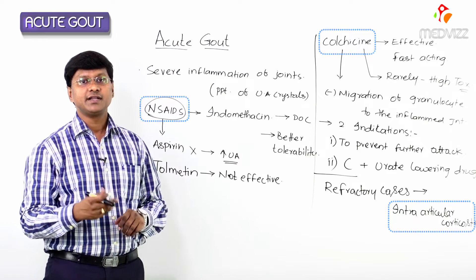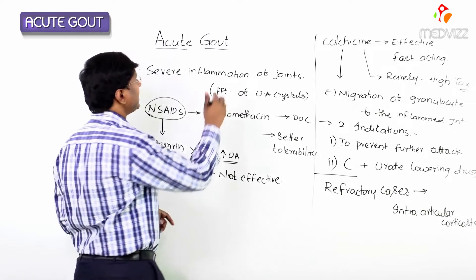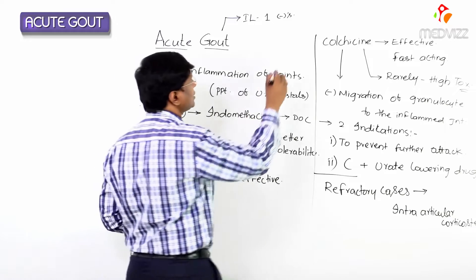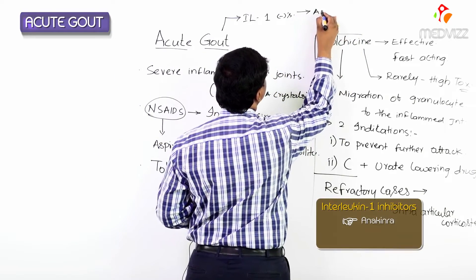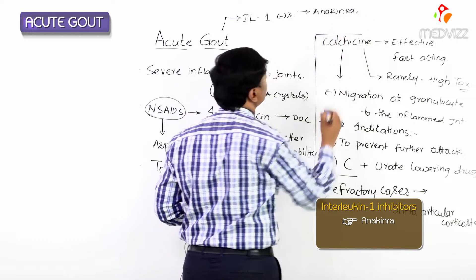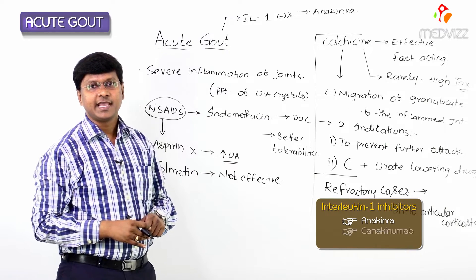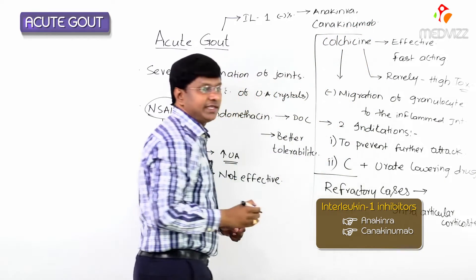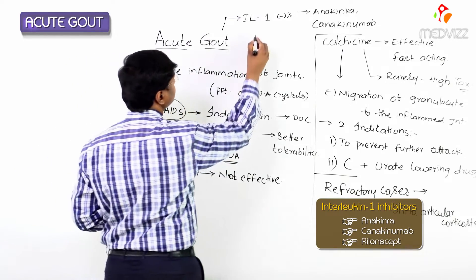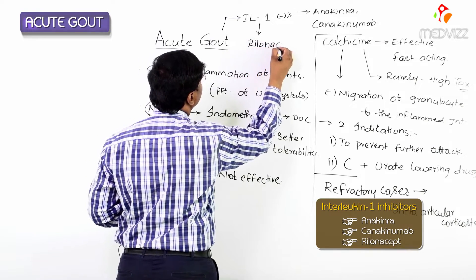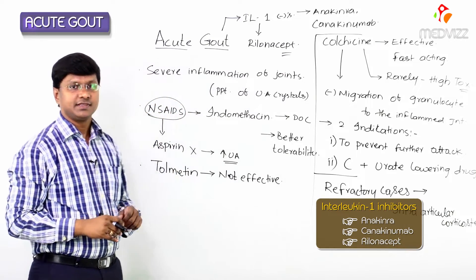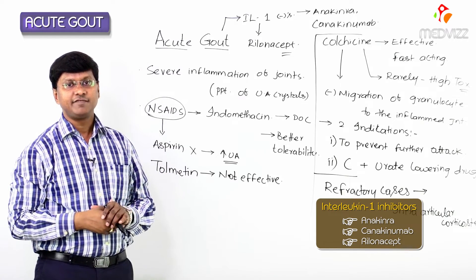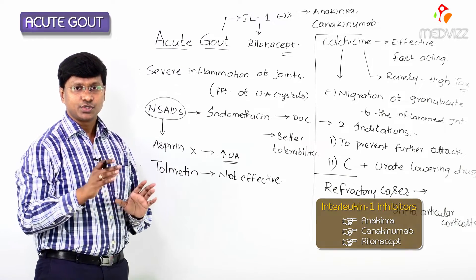Apart from intraarticular corticosteroids, colchicine, and NSAIDs, another group of drugs used in the management of acute gout are interleukin-1 inhibitors. Examples include anakinra, canakinumab, and rilonacept. These have shown efficacy for acute gout but some still require FDA approval for this indication.